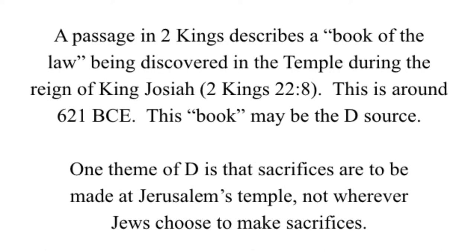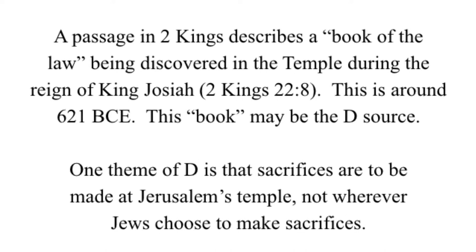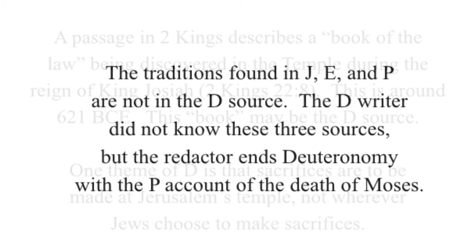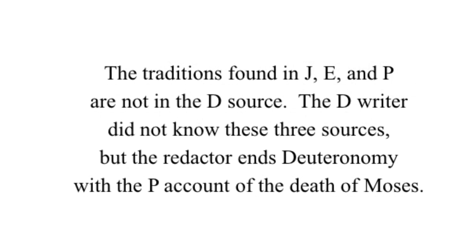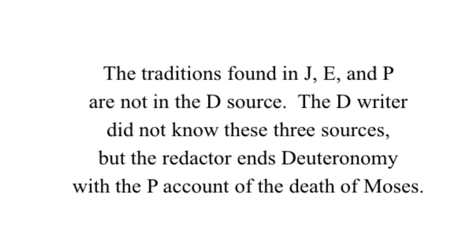A passage in the 2nd book of Kings describes a book of the law being discovered in the temple during the reign of King Josiah, around 621 BC. This book may be the D source. One theme of D is that sacrifices are to be made at Jerusalem's temple, not wherever Jews choose to make sacrifices. The traditions found in J, E, and P are not in the D source.